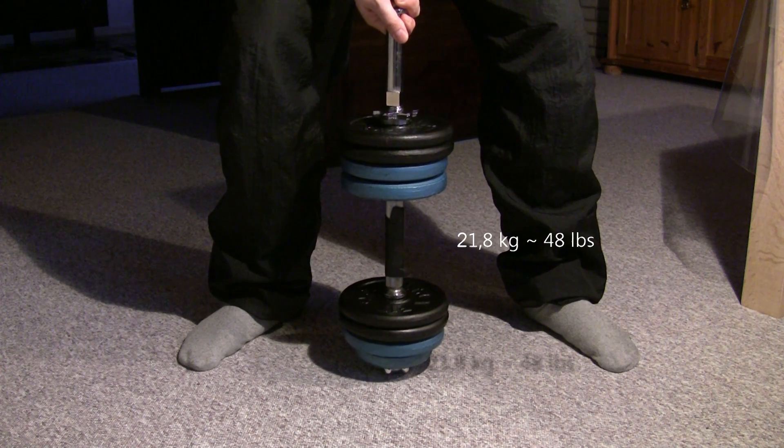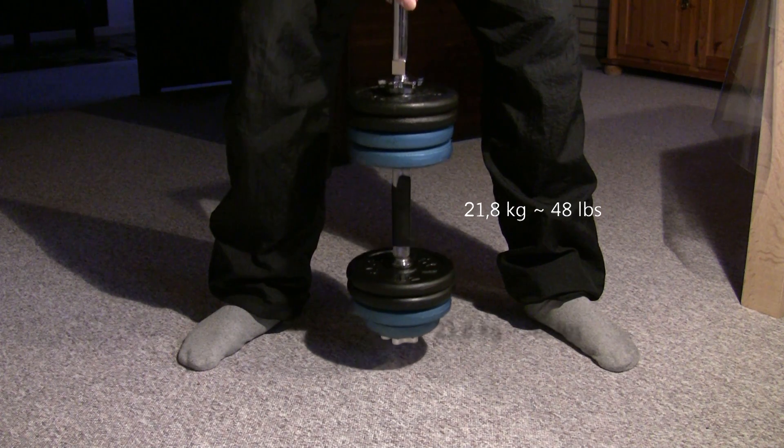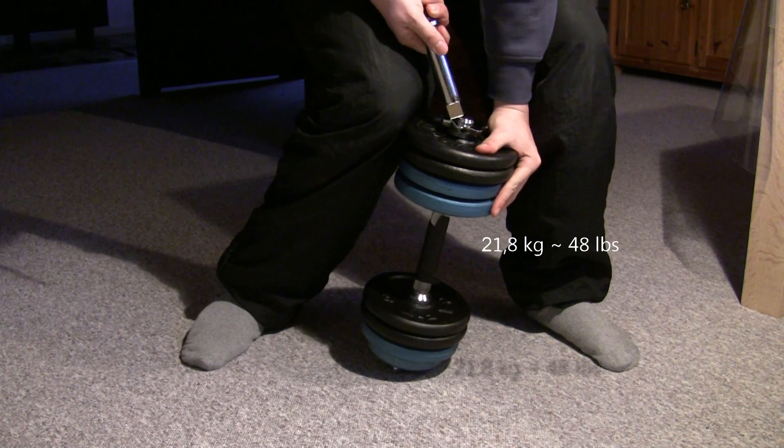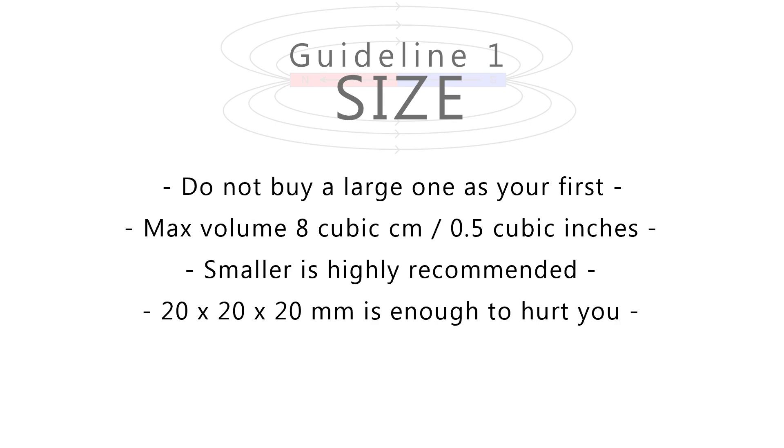Imagine having skin pinched between the magnet and a solid metal bar. A 20 millimeter cube will easily give you blood blisters or even bite skin off. It will however not break your fingers, but this magnet is the largest I can recommend for a beginner.